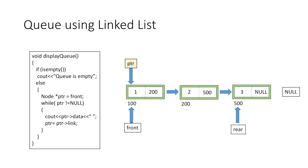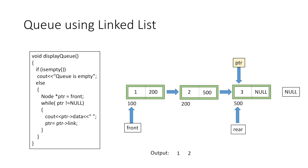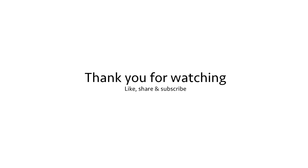Let's trace through: we display the data of the current node, which is 1, then move ptr to the next node and display 2, then move ptr again and display 3. This time when we make ptr equal to ptr's link part, ptr becomes null and we have successfully displayed all elements in the queue. The code for this tutorial is linked in the description. Thank you for watching.